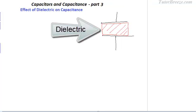A dielectric material is a non-conducting material. Some of the commonly used dielectrics are glass, polyethylene, mica, mylar, etc.